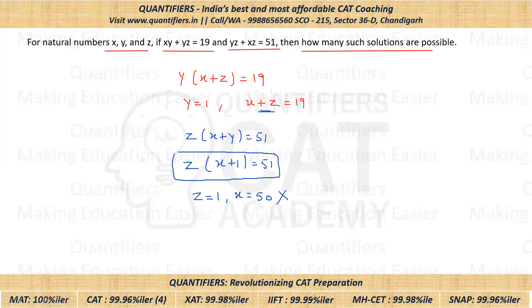Okay, so z equals 1 is not possible. Now let us look at the other factor of 51. So can I say z can be 3 now? If I put z as 3, can I say this thing will become 17? And if this is 17, x plus 1 is 17, can I say x will be 16?